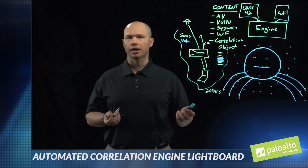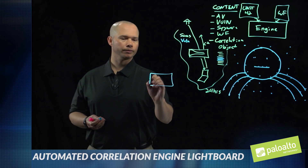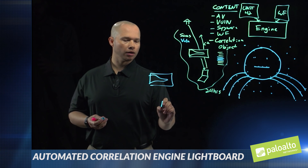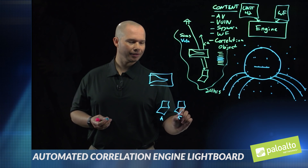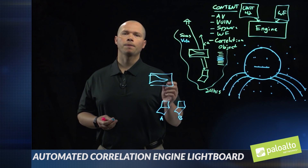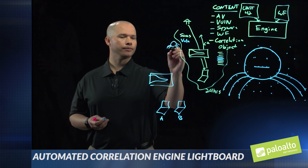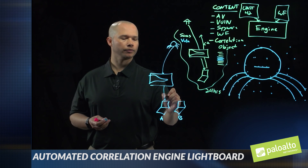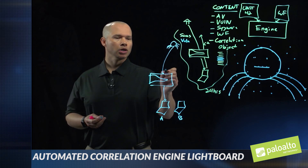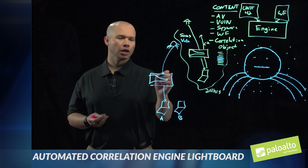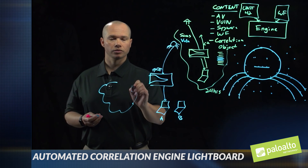The second part is how WildFire can actually play into this solution as well. Let's start by looking at our firewall and a couple of hosts behind it that you're protecting. Let's say host A downloads a file. At the time, we may not know if this file is malicious — by definition, for this example, we won't. That means the file is going to come down to the endpoint. What we're also going to do is take that file and send it off to WildFire.